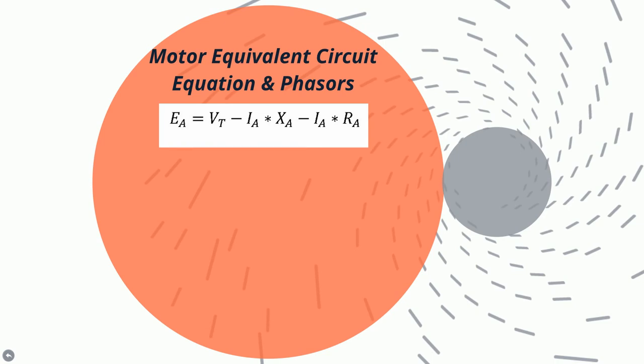This equation shows that the internal voltage of the motor EA equals the terminal voltage VT minus the armature current IA multiplied by the reactance losses XA and minus IA multiplied by the resistance RA. Another way to look at this equation is through the phasor diagrams.